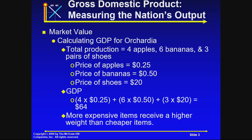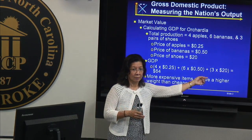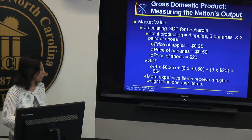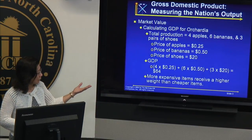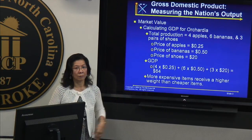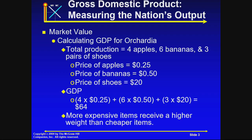We also say that more expensive items receive a higher weight than cheaper items. As you can see, the most expensive item is the pair of shoes at 20 dollars. That one has a higher weight — about 60 dollars out of 64, which is roughly 90 percent. So that's what is meant by higher weight.